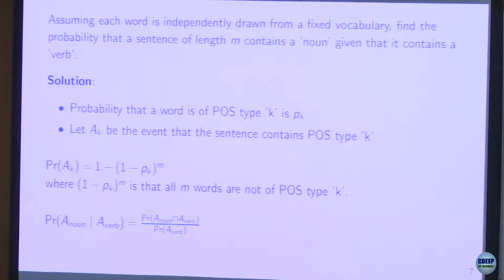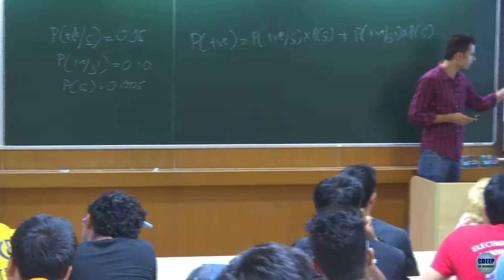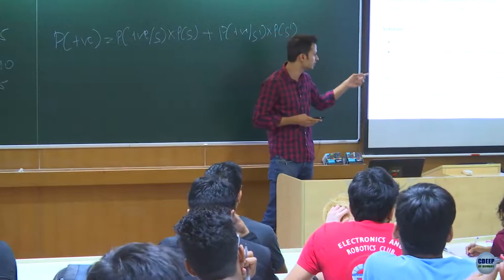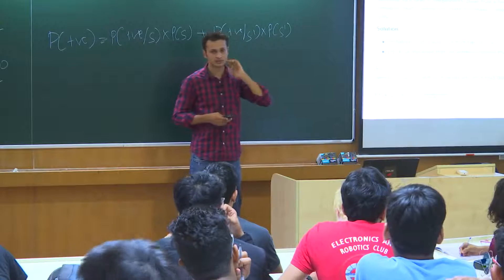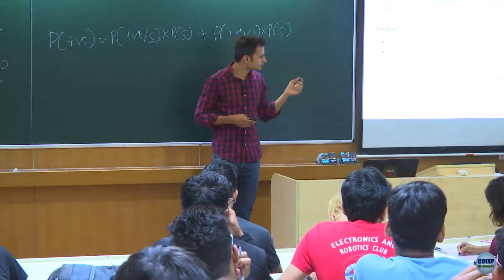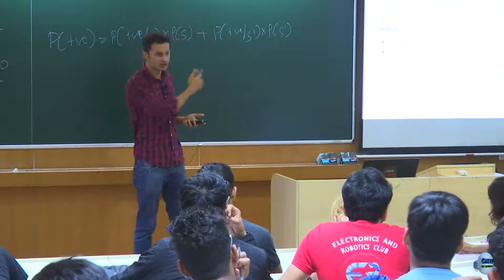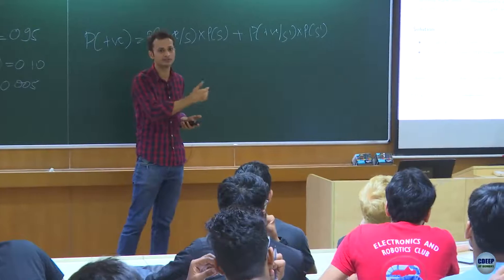Find the probability that a sentence of length m contains a noun given that it contains a verb. The probability of event A_k — that a sentence contains a POS of type k — is 1 minus (1 - p_k)^m. At least one word should be of type k, so 1 minus the probability that none is of that type, which is (1 - p_k)^m.